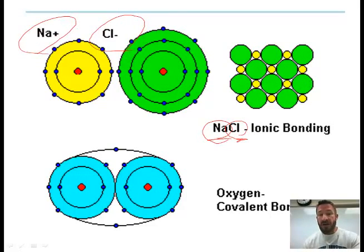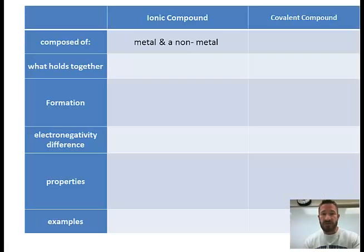Covalent compounds, there are no charges in the atoms. They share electrons. So oxygen would be a covalent compound. Anything that's two non-metals is covalent. So let's fill out part of this chart. What is an ionic compound? It's composed of a metal and a non-metal. Covalent compound is two non-metals.